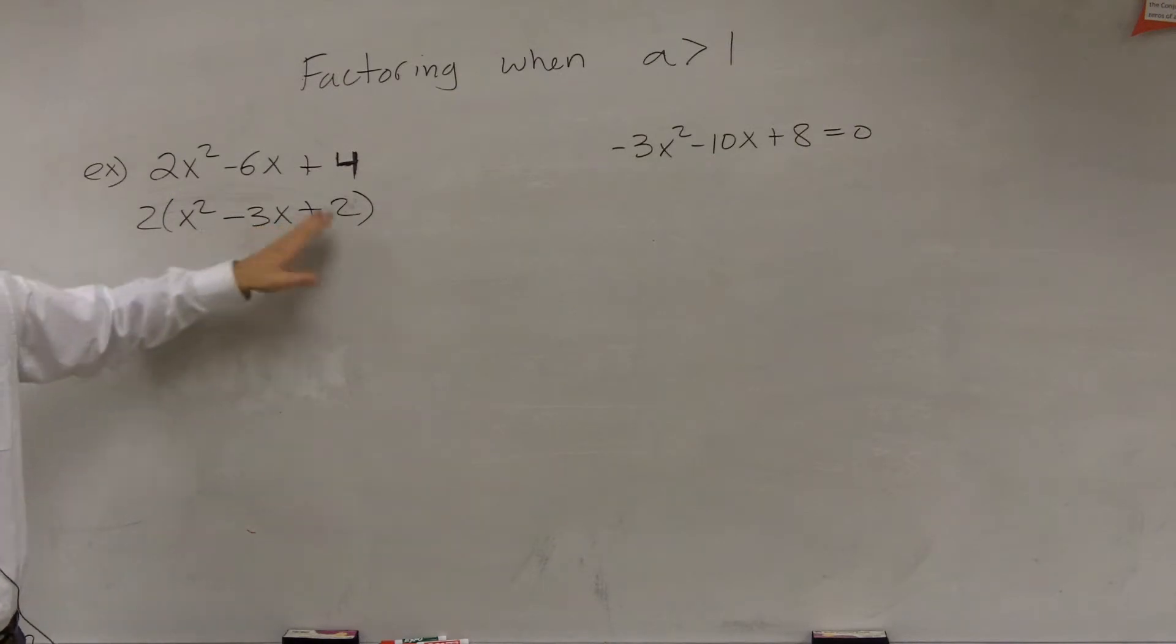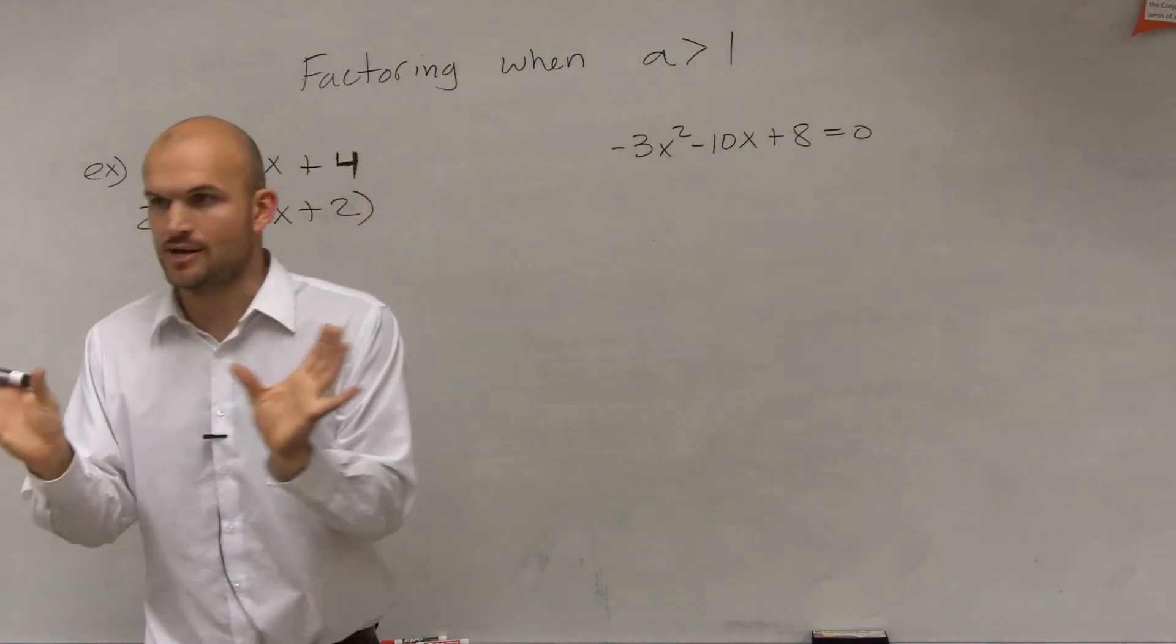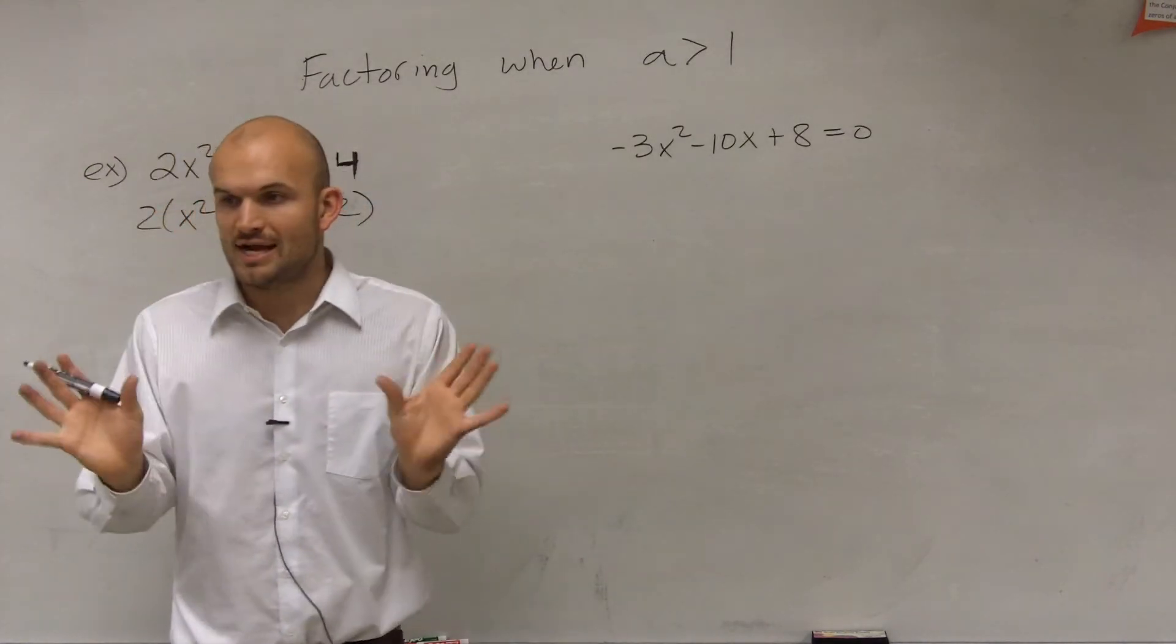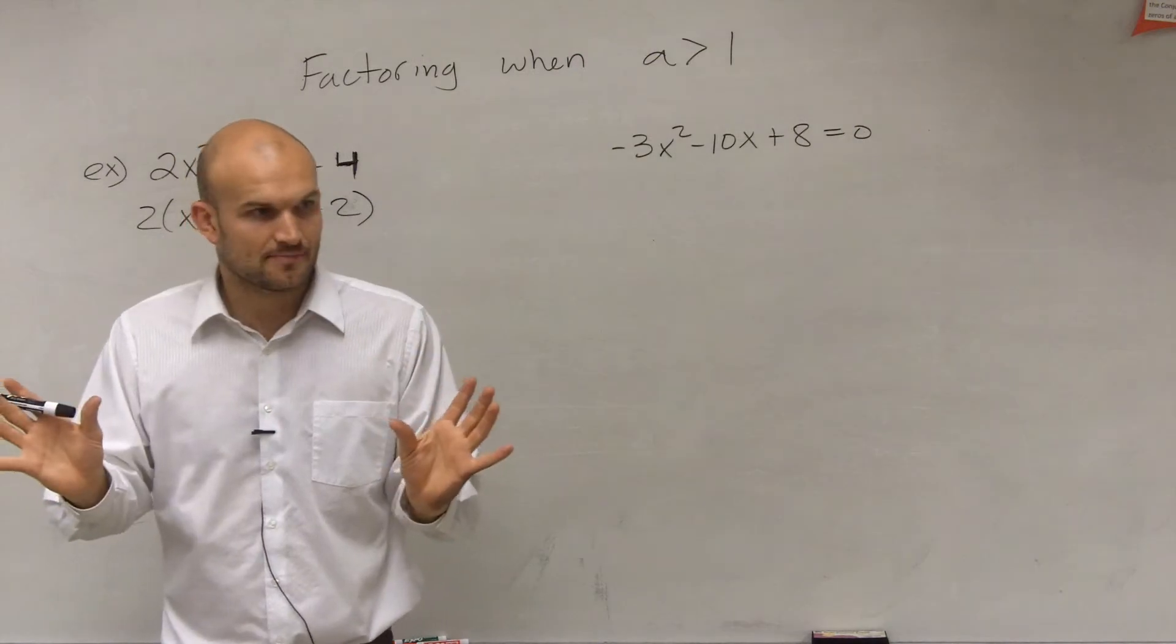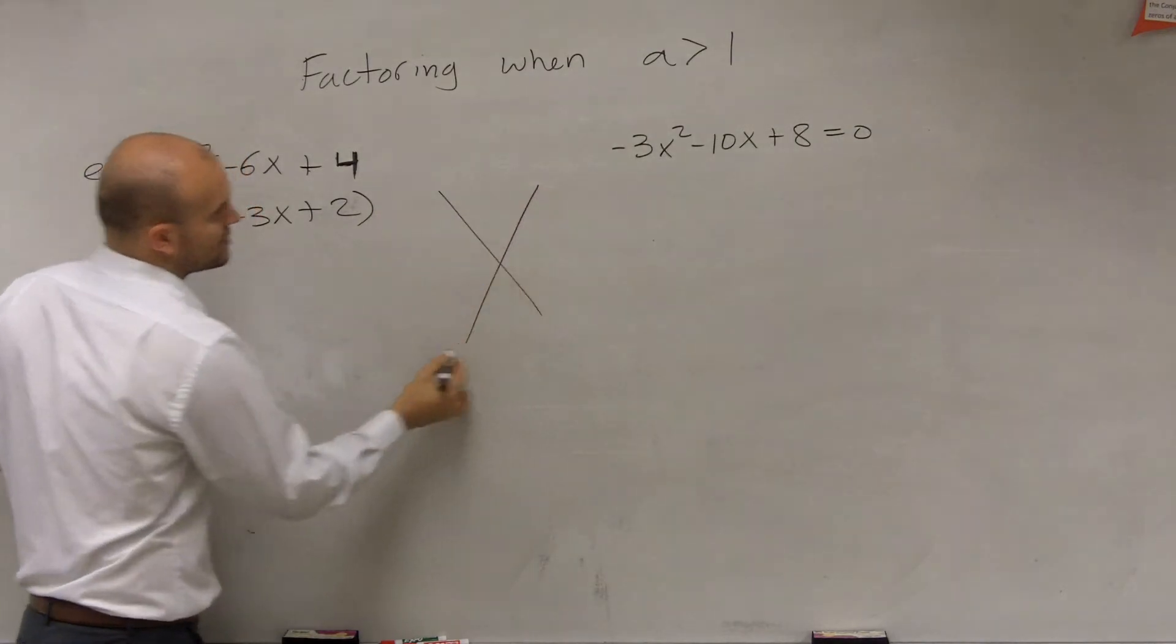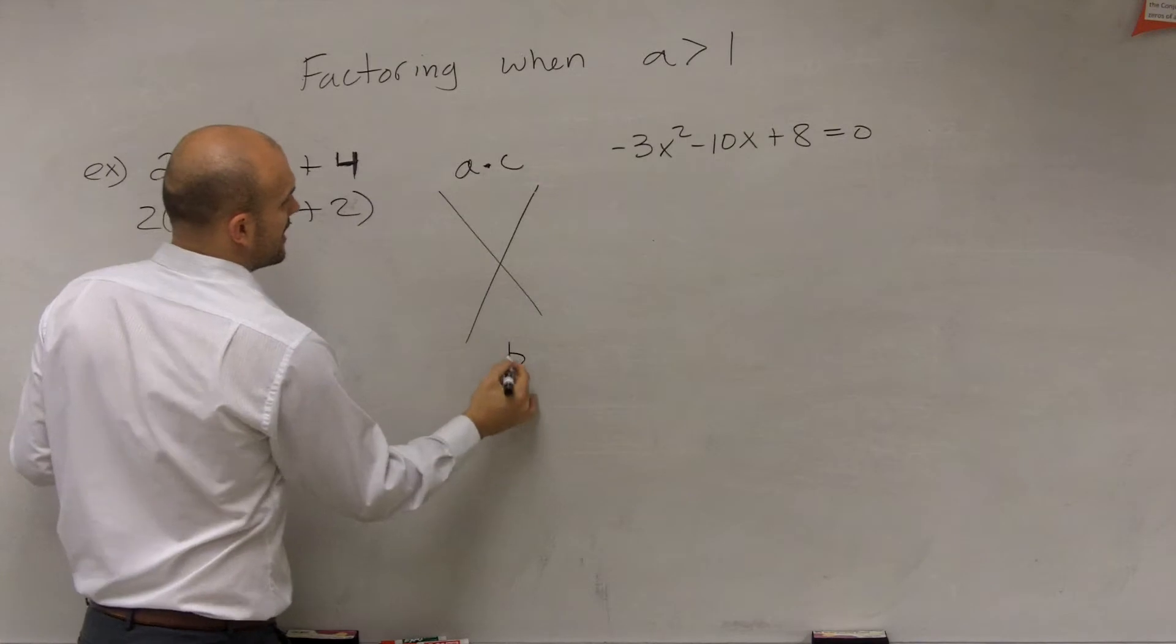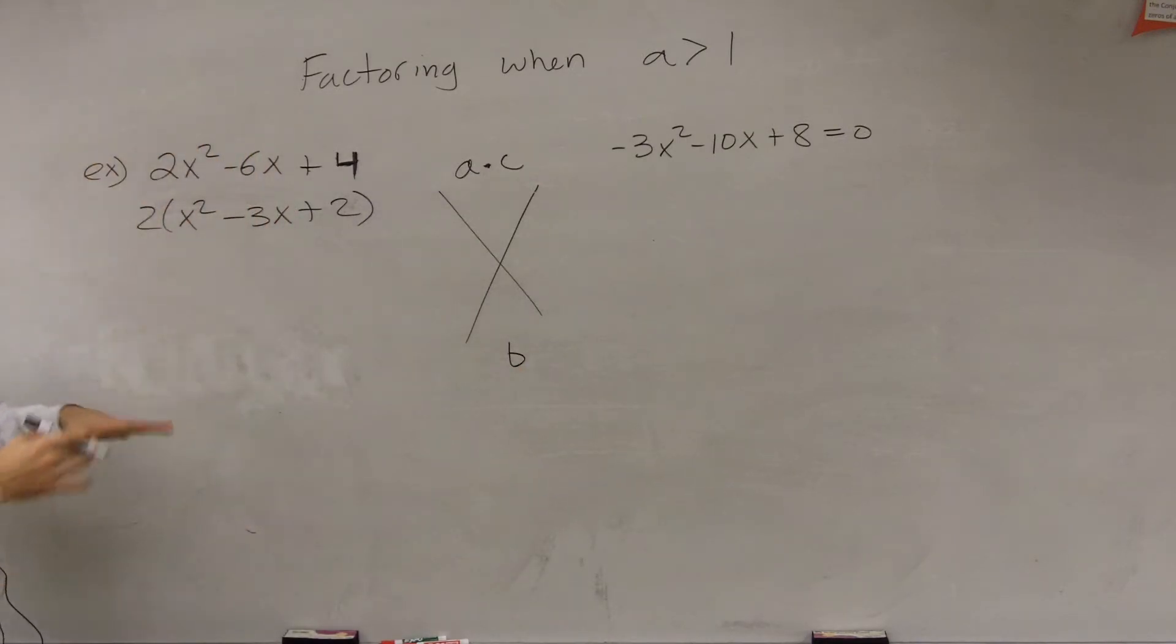Now, how do we factor? Remember, the whole process of factoring was taking a trinomial, a polynomial of three terms, and writing it as a product of two binomials. One way I told you to do that is to set up a diagram where you take a times c and then b. Since I factored out the 2, I can rewrite this as x² - 3x + 2. I'll explain why I don't care about that 2 right now.